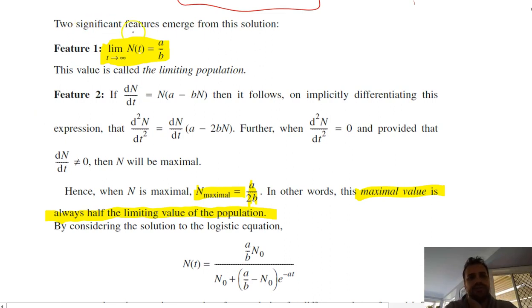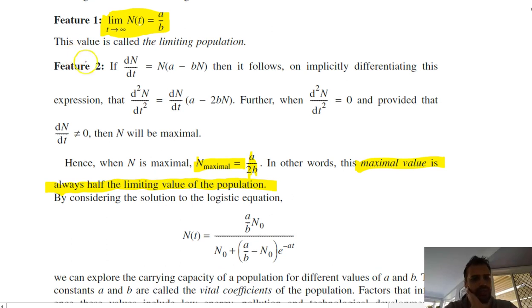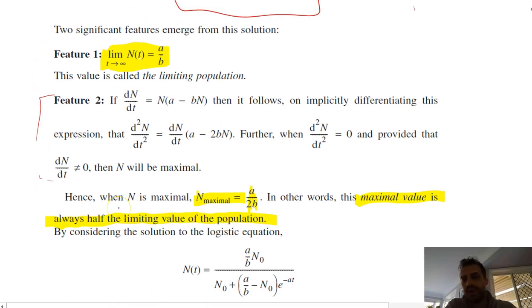Okay, and finally, two significant features emerge from this solution. A over b is going to be the limiting population. And then we talked about feature 2 here. Don't need to worry too much about this. But the important thing to note is that when we're asking about maximal population, we had our graph, a logarithmic graph like that.